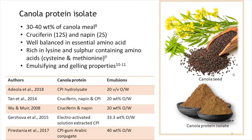These tables show various canola proteins that have been utilized to stabilize emulsions with different oil concentrations. For example, the enzymatically-modified canola protein, cruciferin and napin fractions, as well as canola protein-gum arabic conjugate. To date, no canola protein-stabilized concentrated emulsion has been reported.